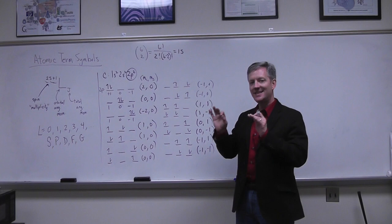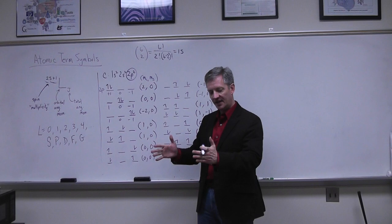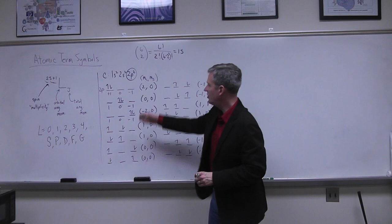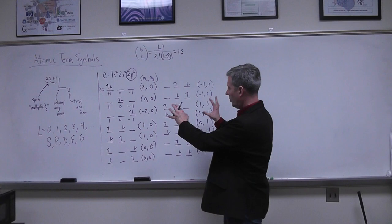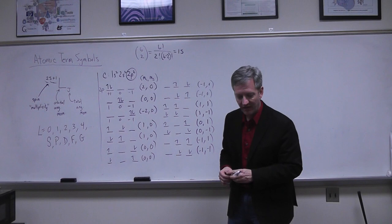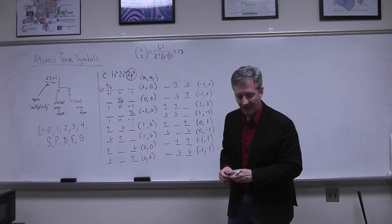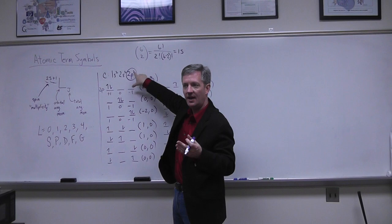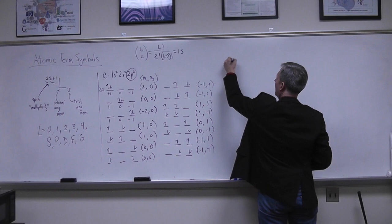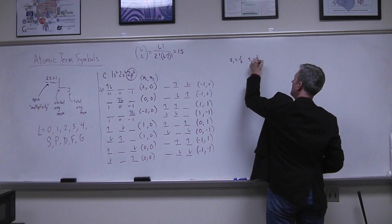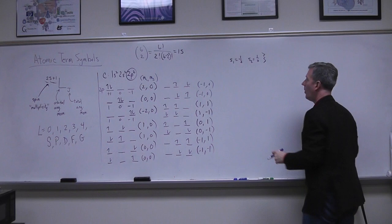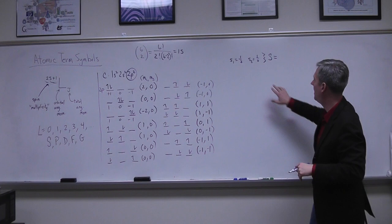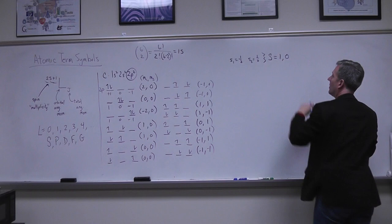I've now characterized all 15 Slater determinants by their (M_L, M_S) pairs. Each corresponds to a two-by-two Slater determinant. Now I want to figure out how to group them into atomic term symbols representing degenerate sets of wave functions. Since both electrons are in p-type orbitals, l₁ = l₂ = 1 and s₁ = s₂ = 1/2.